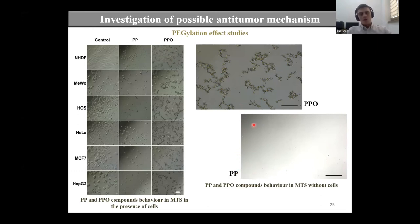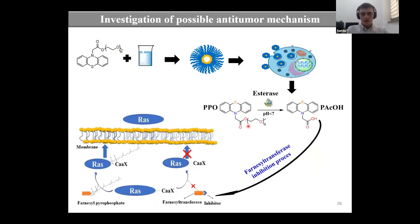These results made us conclude that the possible mechanism of action of this compound is: our compound PPO in a biological medium forms aggregates which are safely delivered to the cells where they enter in the cells by endocytosis. These compounds are hydrolyzed by esterase or other enzymes to phenothiazine acid which will bind magnesium or zinc ions and this way inhibiting the farnesyl transferase.